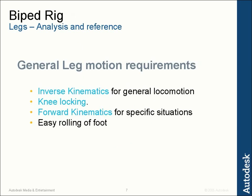Based off of our reference, we can come up with some general leg motion requirements. First is inverse kinematics for general locomotion — we want to be able to put the foot wherever it needs to be and have the knee do the correct thing. It's also important to be able to lock the knee to the ground if necessary. We also need forward kinematics for specific situations, like if the character is jumping and the legs are just going to be flailing through the air.